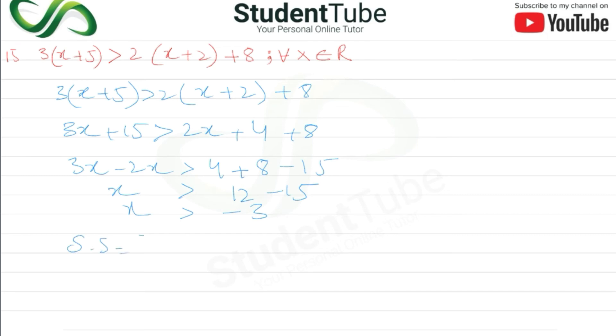So the solution set is x is greater than -3, so that means -2, -1, 0, 1, 2, 3, 4 and so on.